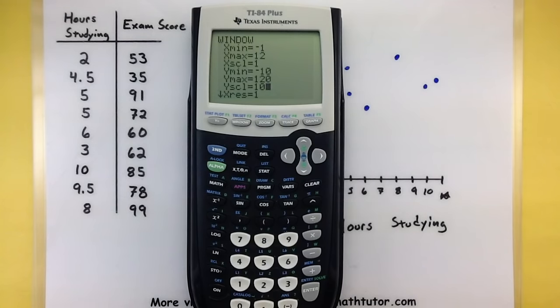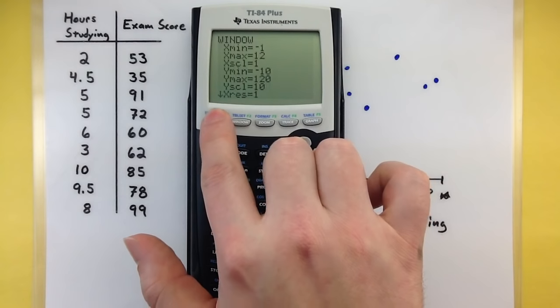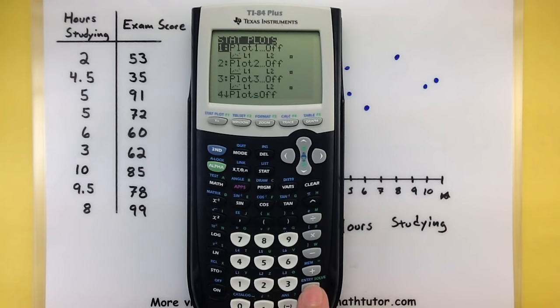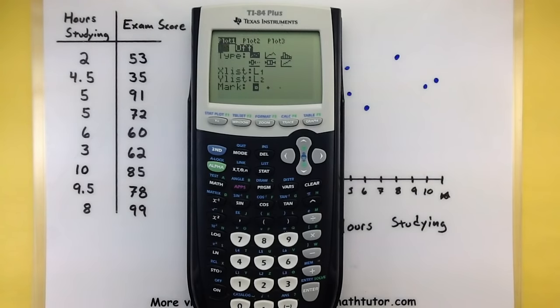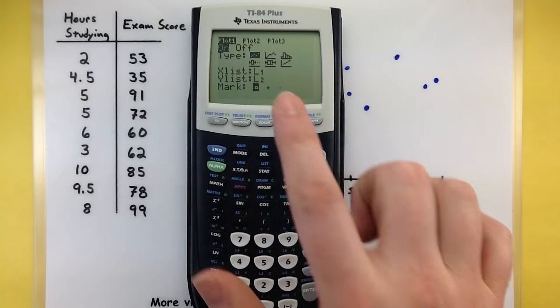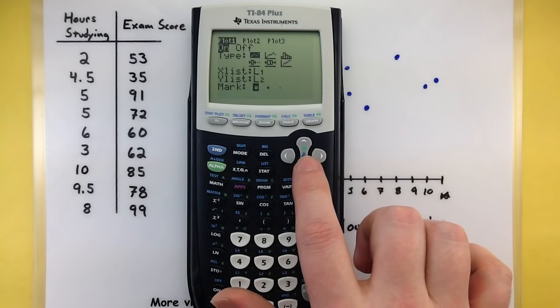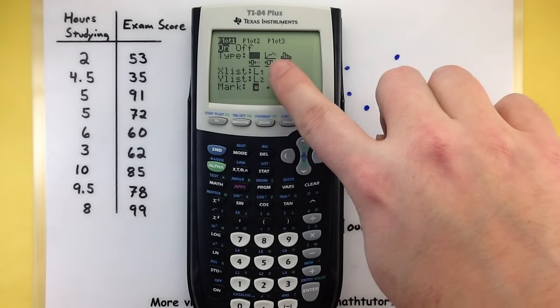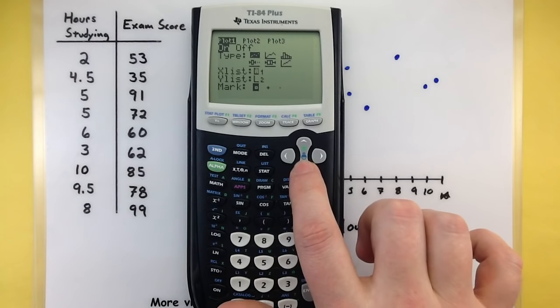Let's go now into our stat plot. You'll see that option right above the y equals. So, second, stat plot. The first one is usually selected, so go ahead and press enter. Now we have lots of options. The very first thing we want to do is just turn it on, so select enter. Now we can select what type of plot we want to use, and this first one with a whole bunch of dots is our scatter plot. So make sure that that is highlighted. If not, go ahead and select it and press enter. We're going to take our data from list one to list two, which is perfect. So let's keep scrolling down.